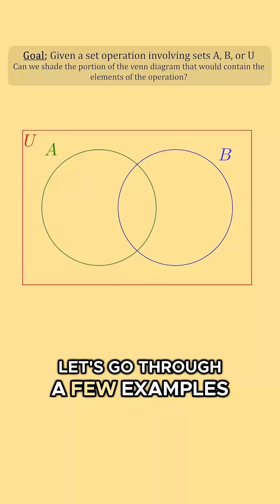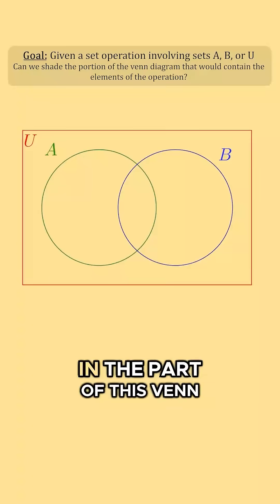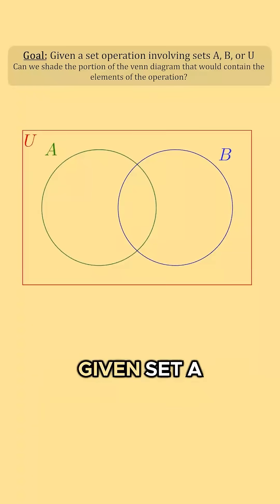Quickly, let's go through a few examples where we're going to shade in the part of this Venn diagram that matches the set operation given.